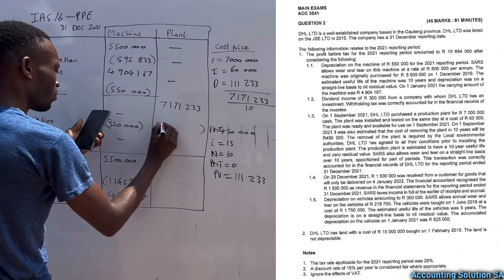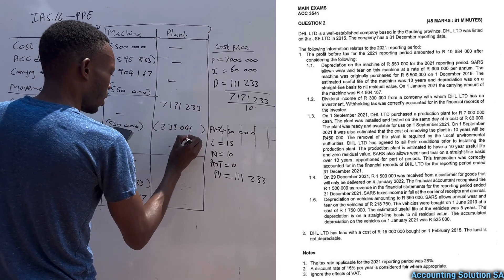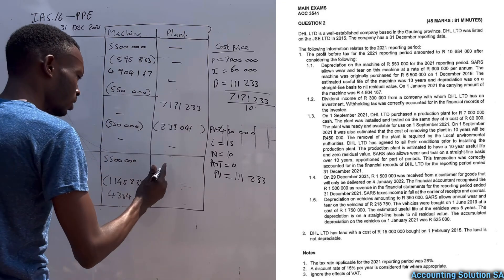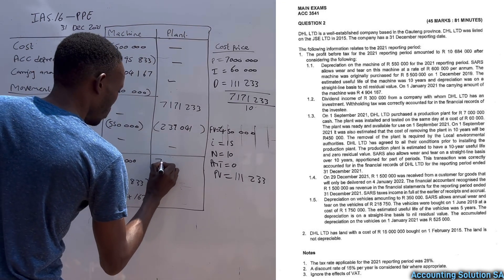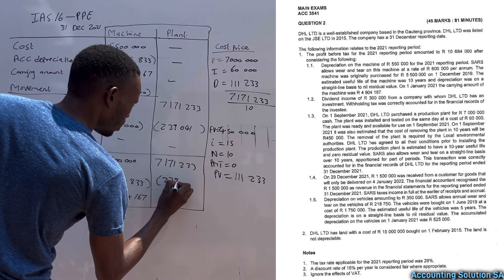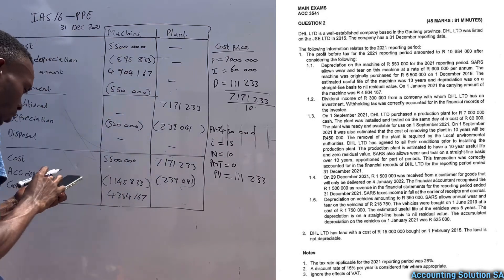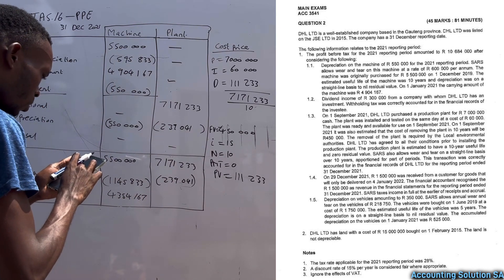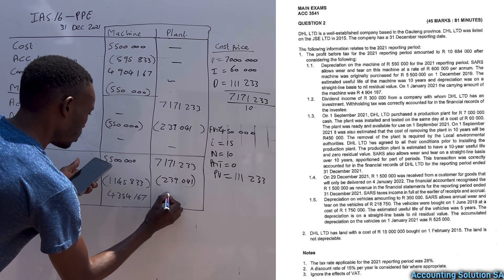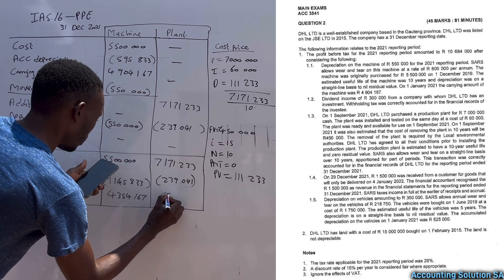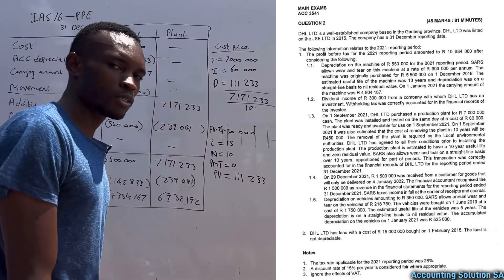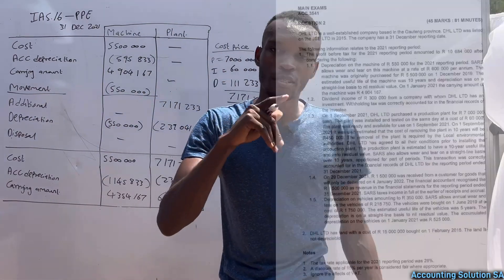So the formula is: 7,171,233 divided by 10, multiplied by 4/12. This gives depreciation of 239,041. Since there are no other movements, the closing cost stays at 7,171,233. Subtract 239,041 accumulated depreciation to get a closing carrying amount of 6,932,192.